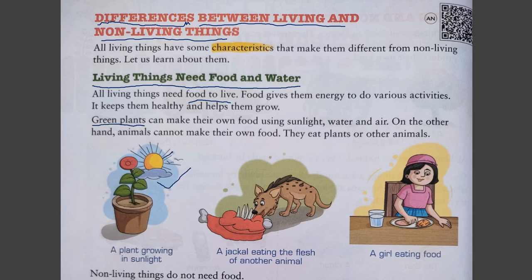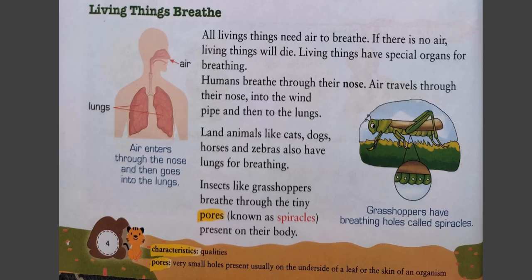Animals cannot make their own food; they eat plants or other animals. We can see a plant growing in sunlight, a jackal eating the flesh of another animal, and a girl eating food. Non-living things do not need food — for example, a table and chair do not need food.